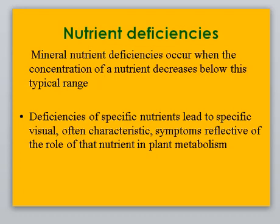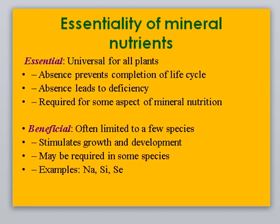Nutrient deficiency. Mineral nutrient deficiency occurs when the concentration of a nutrient decreases below its typical range. Deficiency of a specific nutrient leads to specific visual, often characteristic symptoms reflective of the role of that nutrient in plant metabolism. Essential nutrients are universal for all plants — their absence prevents completion of the life cycle and leads to deficiency. A third category is required for some aspects of mineral nutrition.